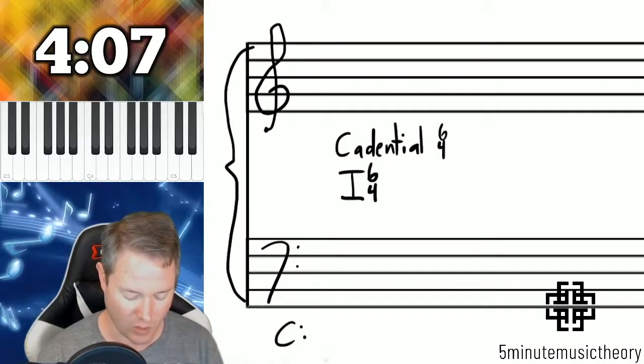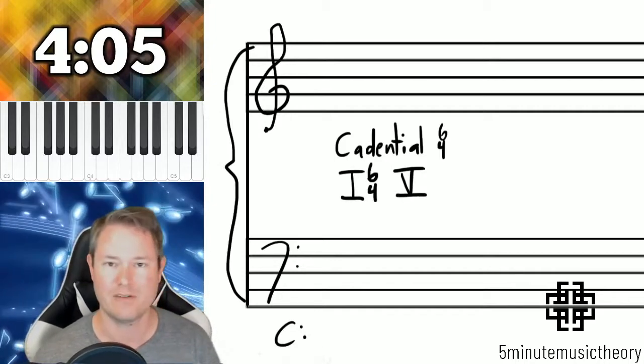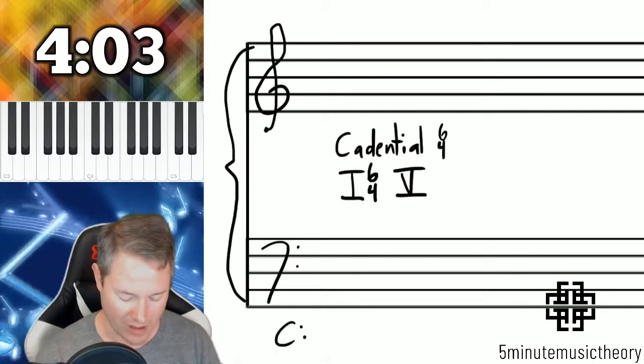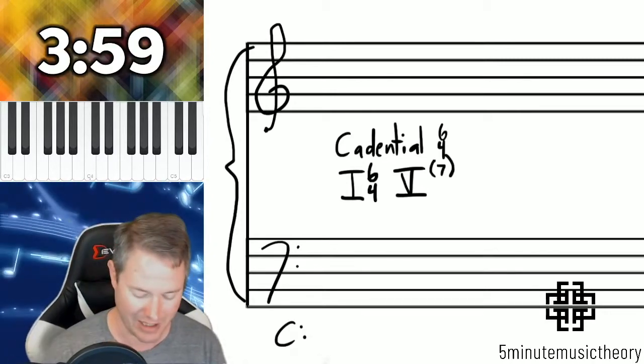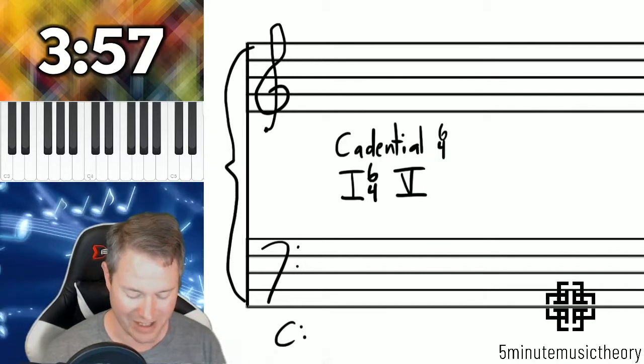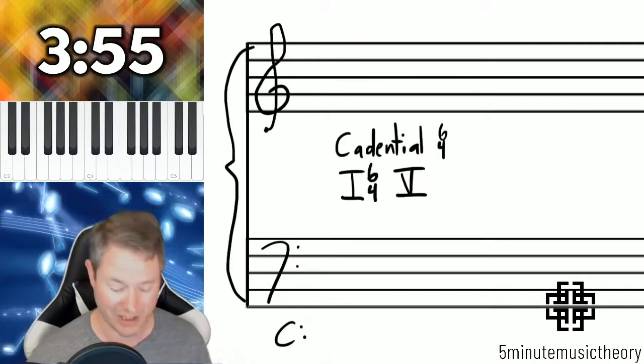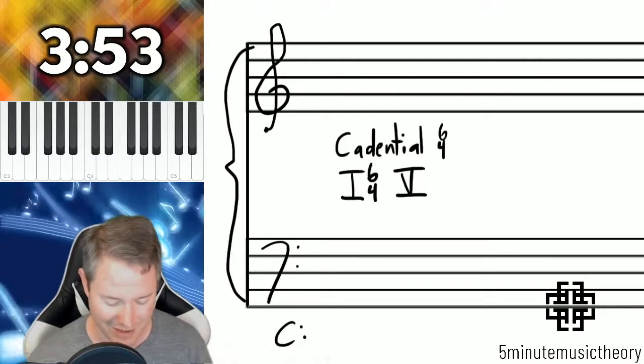It's specifically a tonic chord in second inversion so that's a 6-4 chord followed by a dominant chord. That dominant chord could potentially have a seventh on it and that actually goes for just about any chord that we're looking at, but we're just going to look at these as triads.